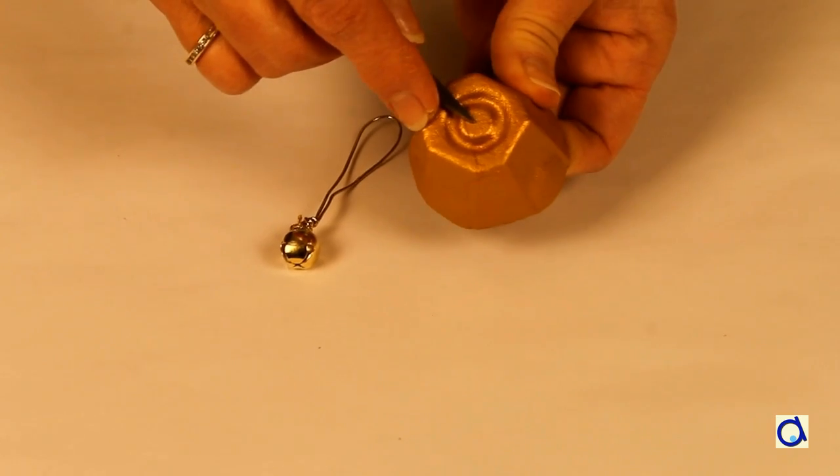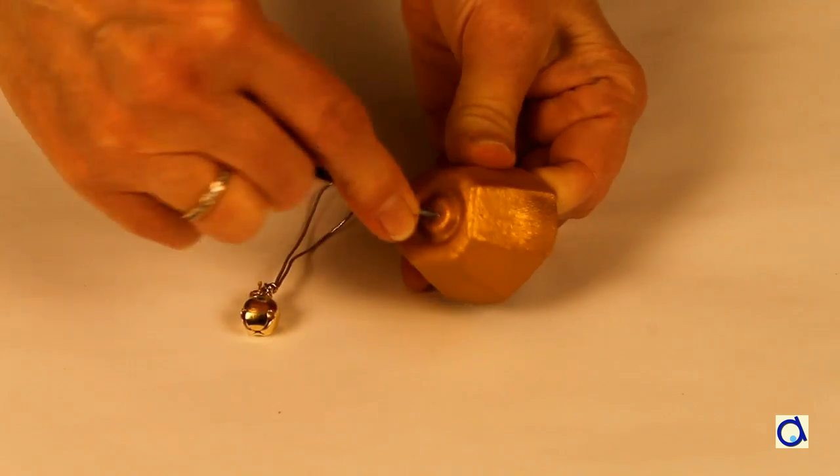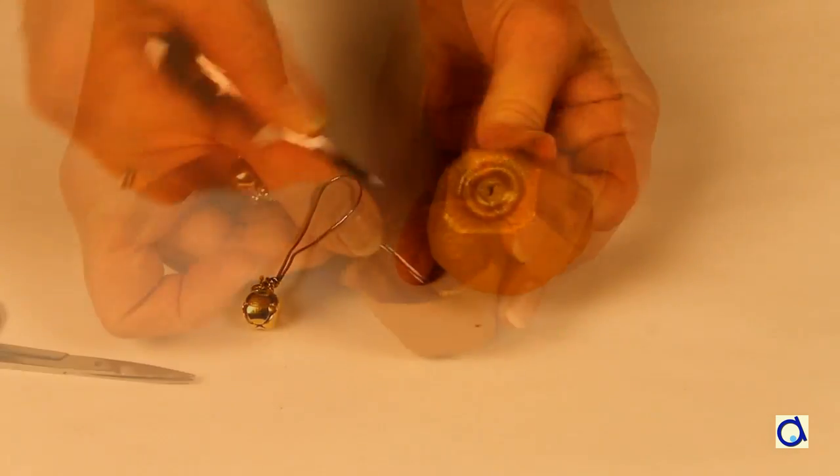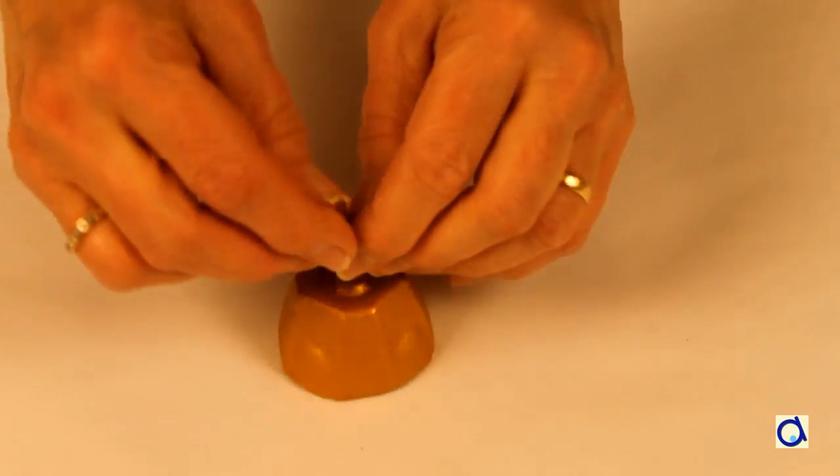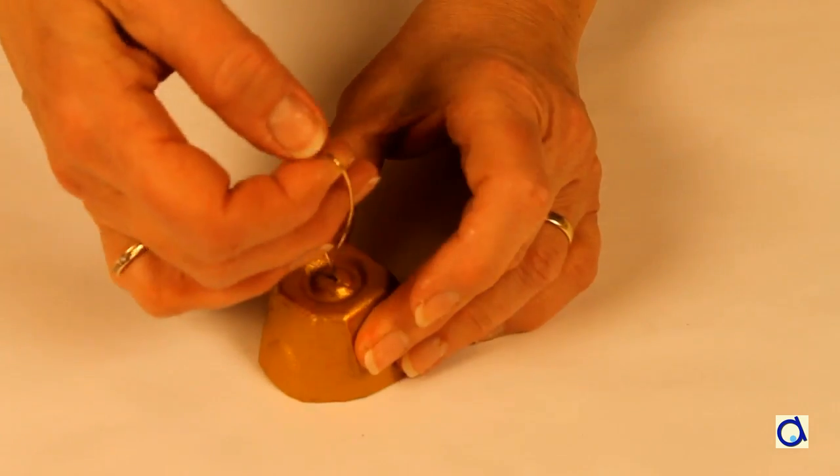With small sharp scissors, cut a small hole in the top of the egg carton cell. Pass the golden thread from the inside of the cell and bring it out on the top of the cell.